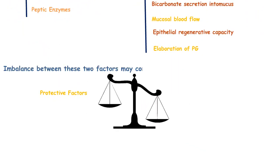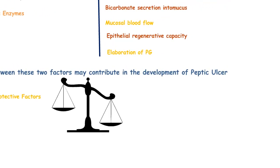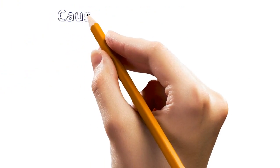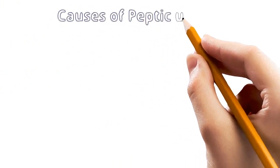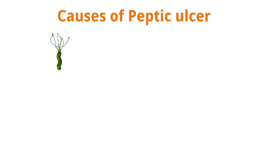Imbalance between these two factors may contribute to the development of Peptic Ulcer. Now moving to major causes of Peptic Ulcer. The first cause is Helicobacter pylori, a microorganism that is responsible for the development of Peptic Ulcer.